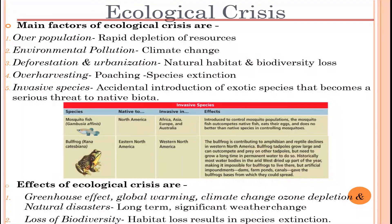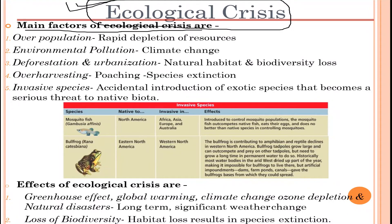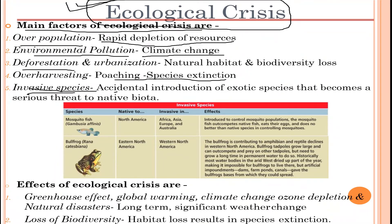Now let's talk about the ecological crisis. The main factors are: overpopulation, which causes rapid depletion of resources; environmental pollution, which leads to climate change; deforestation and urbanization, which cause natural habitat and biodiversity loss; over-harvesting, which causes poaching and species extinction; and invasive species, which involves the accidental introduction of exotic species that become a serious threat to native biota.